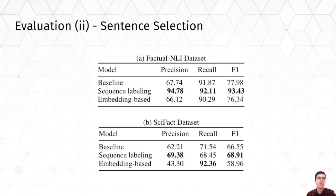Here we see the token-level precision, recall, and F1 score of the proposed sentence selection methods on the FACTCHECK-NLI dataset and SYFACT, a domain-specific medical claim verification dataset. We also compare to a baseline sentence-level NLI approach. We observe that the sequence labeling model gives the highest precision, recall, and F1 on the FACTCHECK-NLI dataset, with significantly higher precision than other methods. On the SYFACT dataset, the sequence labeling method remains the top performer in terms of precision and F1 after fine-tuning, although its recall is lower than the embedding-based method. This shows the sequence labeling model mitigates the high false-positive rate of the embedding-based method by taking surrounding context into account.